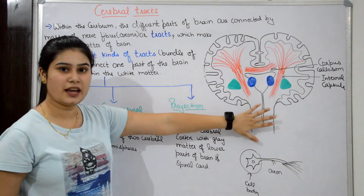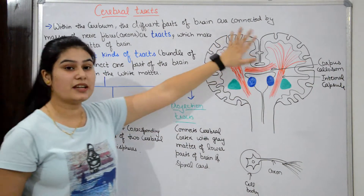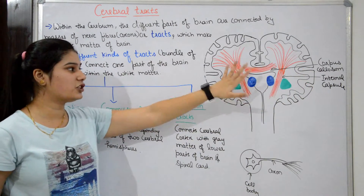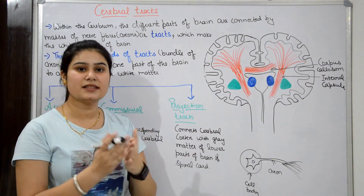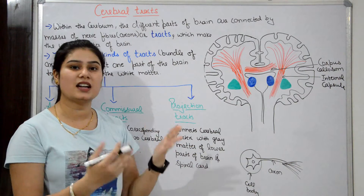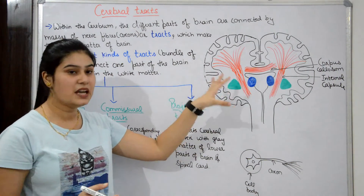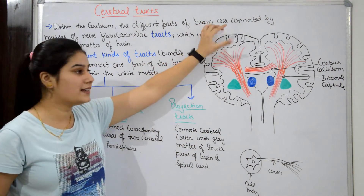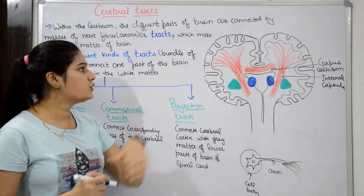This is the frontal section of the brain. Which part of the brain is the Cerebrum? The largest part of the brain is the Cerebrum. There are two regions of the brain: outer cortex and inner white matter.